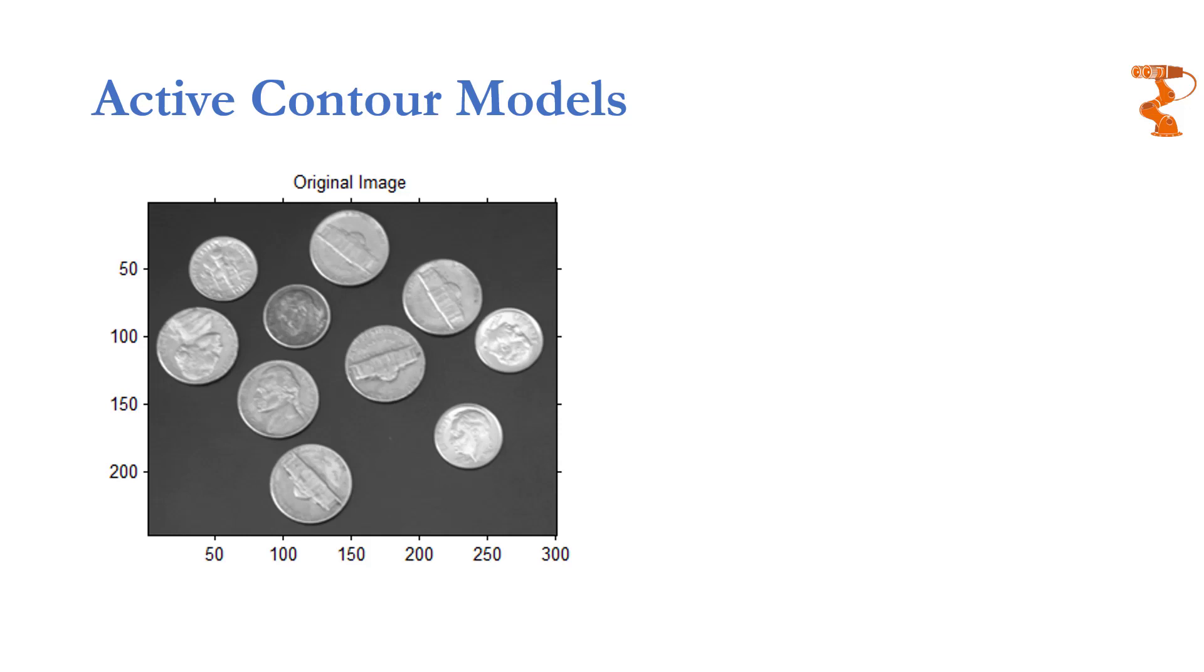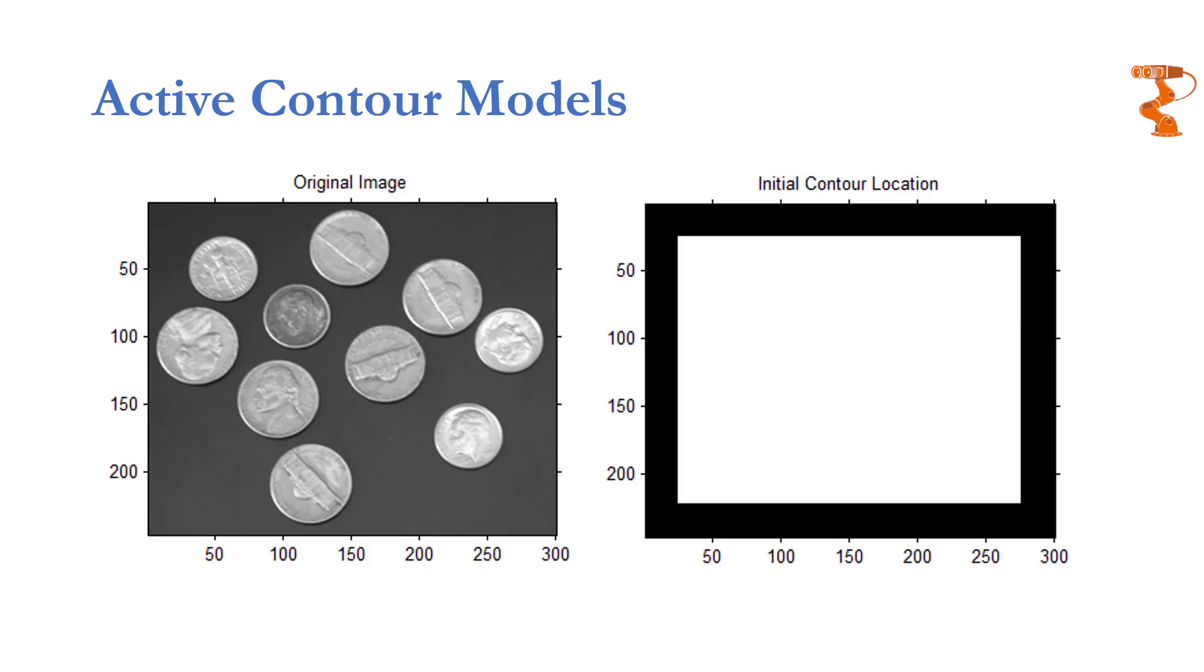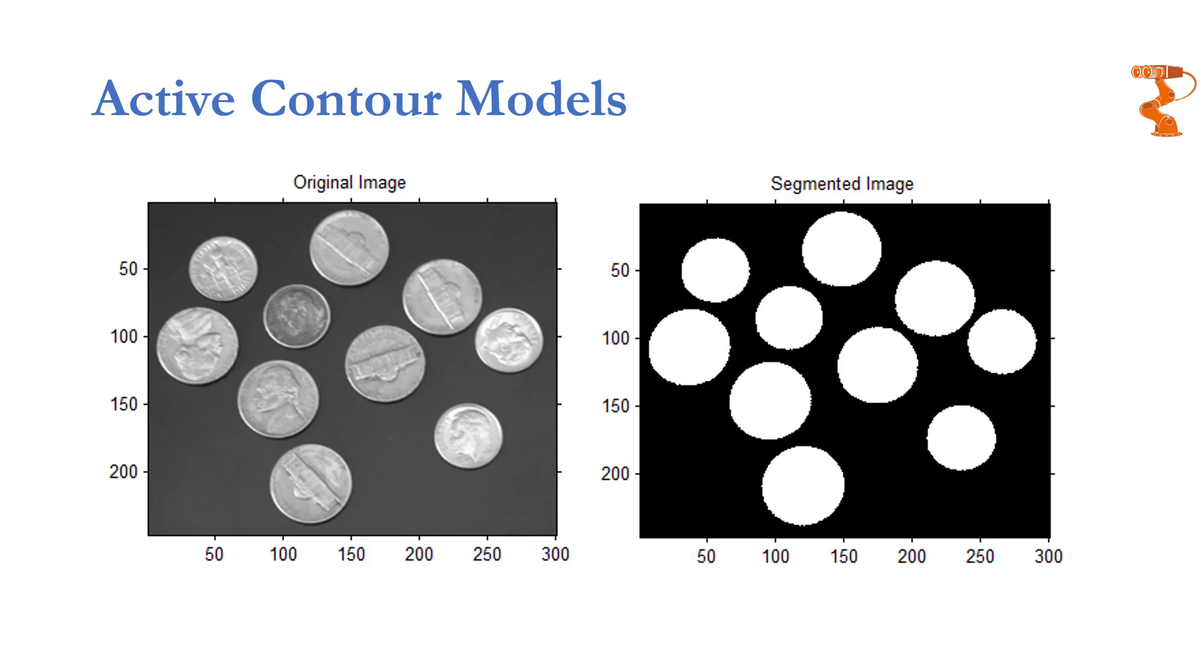For example this black boundary represents the initial location of the snake or the initial location of the contour. Iteratively the model will work and it will try to change its shape and it will try to settle at the edges. The snake will settle at the edges and you will know where the edges are and then you can easily segment out the image. This will be the final output. This thing can very easily be implemented especially on MATLAB because there are built-in functions available and I will definitely give you some assignments and some pointers towards implementing this thing in MATLAB in practical session of this lecture.